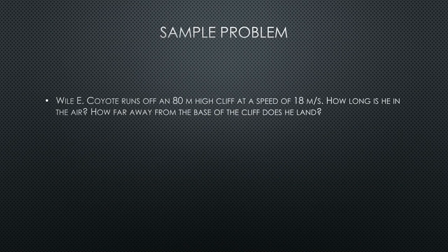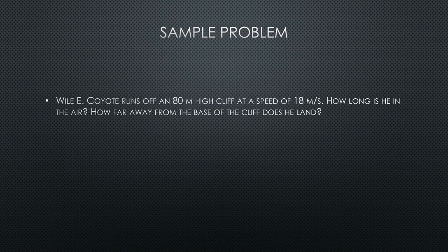Let's look at the following problem and proceed to solve it step by step. Wile E. Coyote runs off an 80 meter high cliff at a speed of 18 meters per second. How long is he in the air? How far away from the base of the cliff does he land?